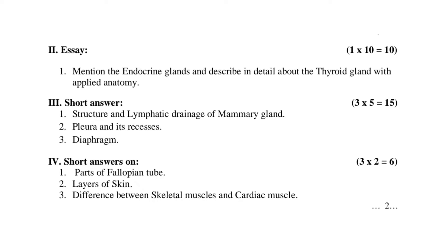Next, Roman numeral II: Essay question — 1 into 10 equals 10 marks. Mention the endocrine glands and describe in detail about the thyroid gland with applied anatomy. Roman numeral III: Short answers — three questions, each carrying 5 marks, 3 into 5 equals 15 marks.